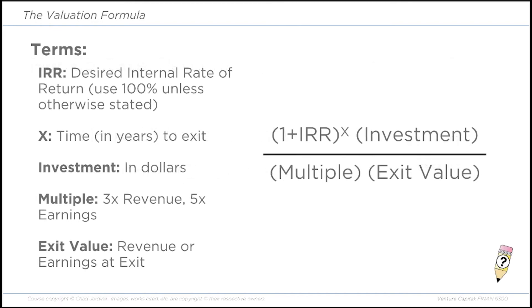IRR is the desired internal rate of return. For this class, we will always use 100% IRR unless another IRR is specified. VC funds need to return 20–30% IRR across their entire portfolio. But venture is risky — if three in five fail, one breaks even, and one generates an IRR of 100% or greater, the average return will be about 25%. So 100% is a good rule of thumb. The exponent X is the number of years anticipated until exit. The investment is the amount of money the investor is putting into the company. The multiple represents an industry multiple applied to a key metric like revenue or earnings, and the exit value is that key metric at the time of exit.